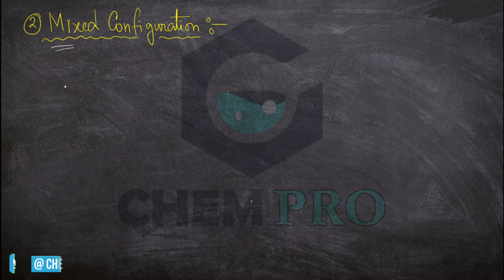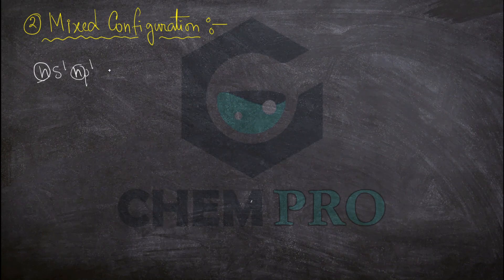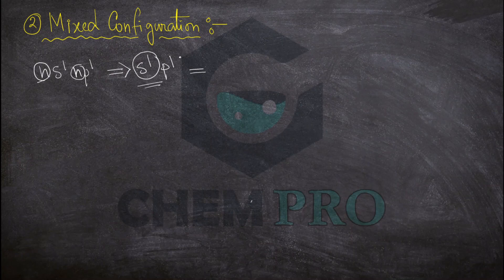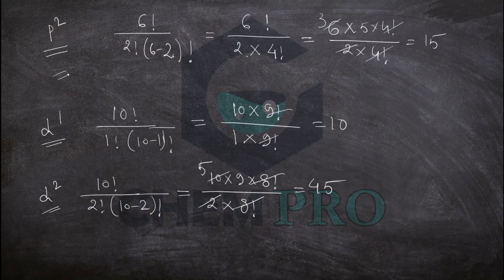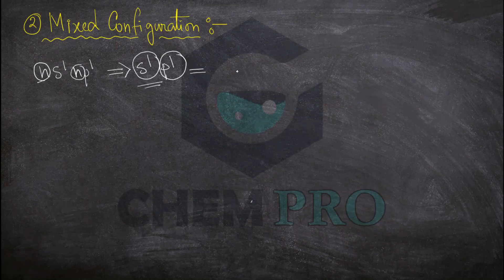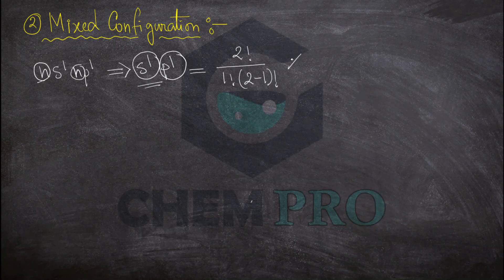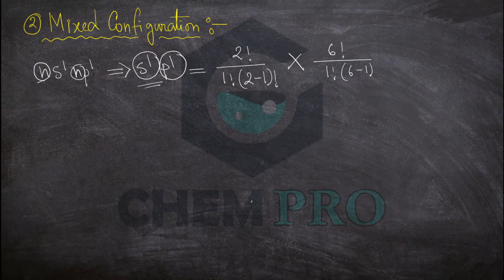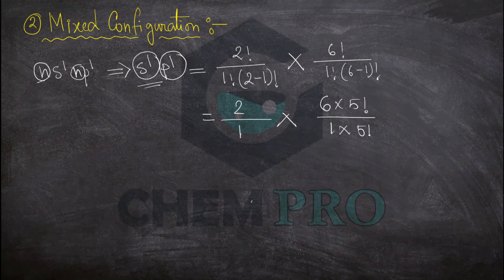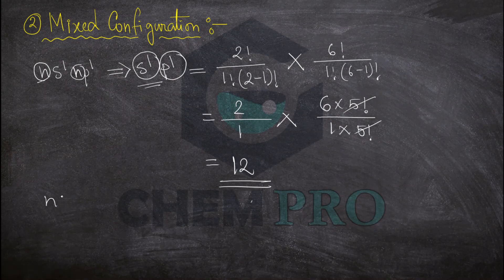Now let's check the number of microstates for the mixed configuration — for example, ns1np1. We can write this as s1p1. For this type of mixed configuration, we separately calculate for s1 and p1 and then multiply the results. For s1: 2!/(1!×1!) = 2. For p1: 6!/(1!×5!) = 6. Multiplying: 2 × 6 = 12 microstates for ns1np1.